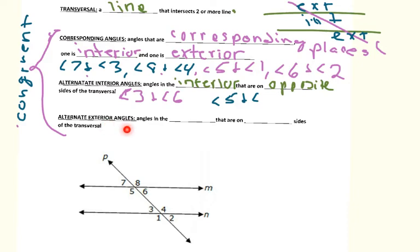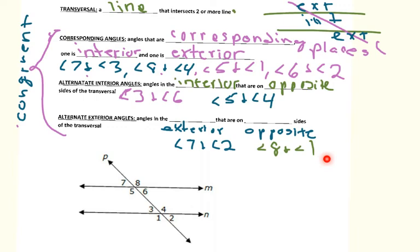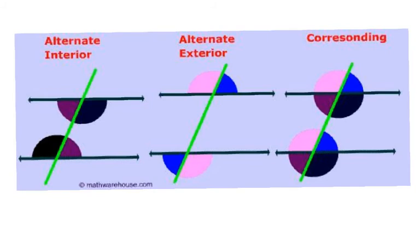Alternate exterior angles are angles on the exterior that are on opposite sides of the transversal. The exterior angles are 7, 8, 1, and 2. Angles 7 and 2 are on opposite sides; angles 8 and 1 are on opposite sides — those are my congruent angle pairs. There are always two pairs of alternate exterior angles and two pairs of alternate interior angles. A picture shows all three: two pairs of alternate interior in purple and black, two pairs of alternate exterior in blue and pink, and four pairs of corresponding in pink, blue, purple, and black.